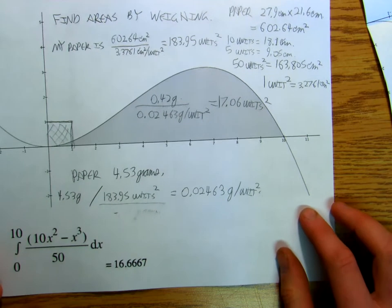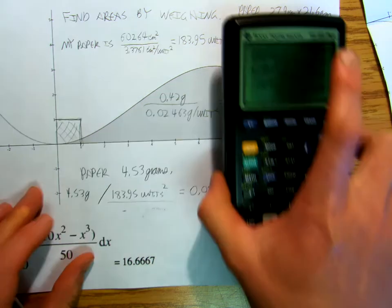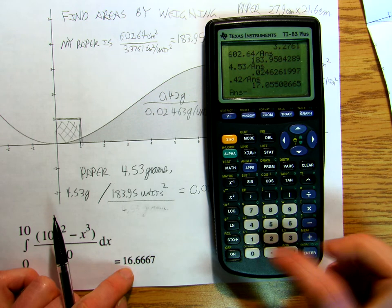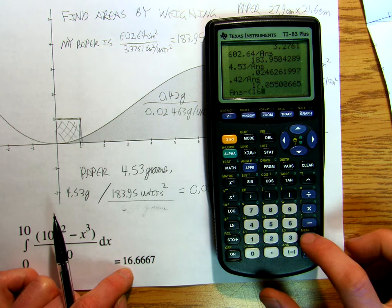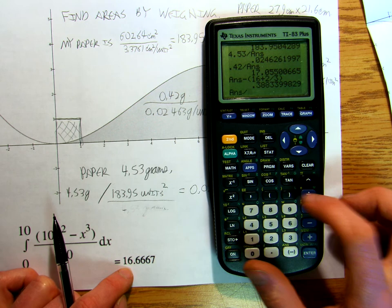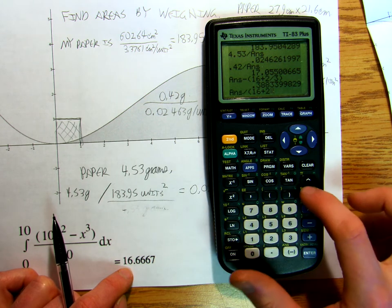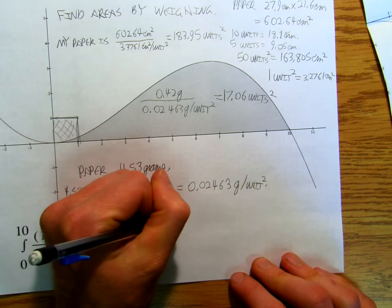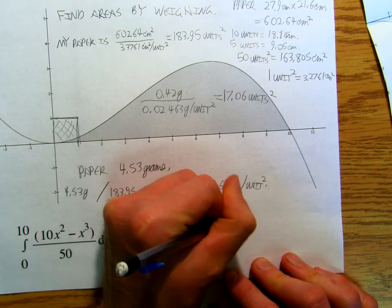And the official answer is 16.666. So I'm off by, take that number subtract off 16 plus 2 thirds and divide that by 16 plus 2 thirds, and I get, my error is approximately 2.3 percent.